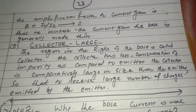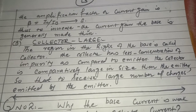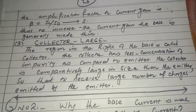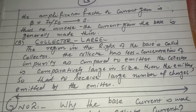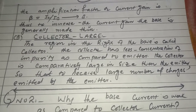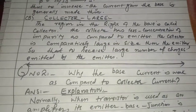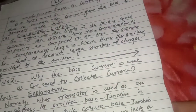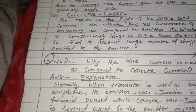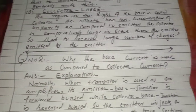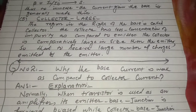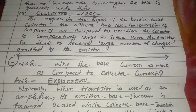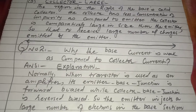So that to receive a large number of charges emitted by the emitter. Question 2 hai: why is the base current weak as compared to the collector current?